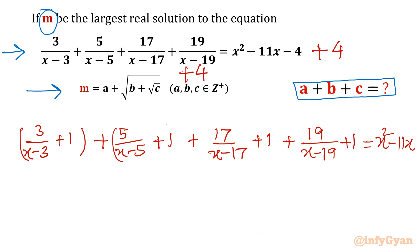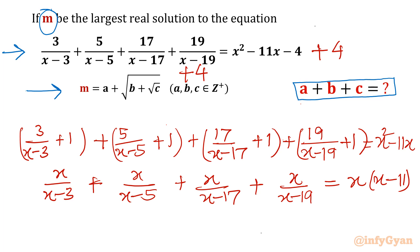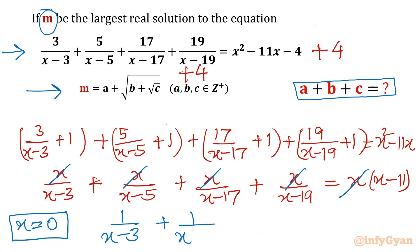Taking LCM for each pair on the LHS, the numerators become x: giving x/(x-3) + x/(x-5) + x/(x-17) + x/(x-19). On the RHS, we factor out x. Moving all terms to one side and cancelling x, we note x = 0 is one solution. What remains is 1/(x-3) + 1/(x-5) + 1/(x-17) + 1/(x-19) = x - 11.